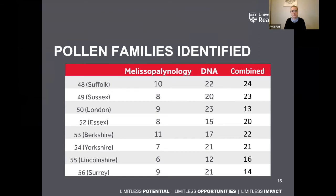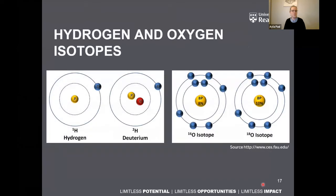Moving on to hydrogen and oxygen isotopes — let's start at the very beginning. What is an isotope? An isotope is one of two or more forms of the same chemical element. Different isotopes of an element have the same number of protons in the nucleus, giving them the same atomic number, but a different number of neutrons, giving each elemental isotope a different atomic weight. So there are lighter and heavier isotopes of the same element.